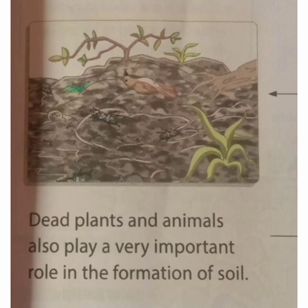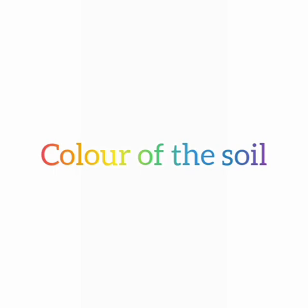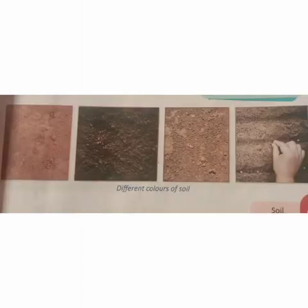Soil formation is a continuous process. Soil is very important for the growth of plants. Have you seen soils of different colors? See the picture — the color of the soil differs from place to place. Soil may be light brown in one place and dark brown in another. In India, red soil and black soil are also found. We will continue the lesson in the next session.